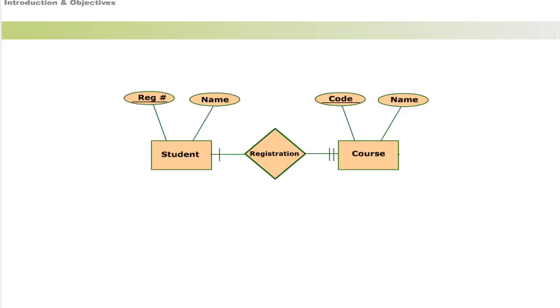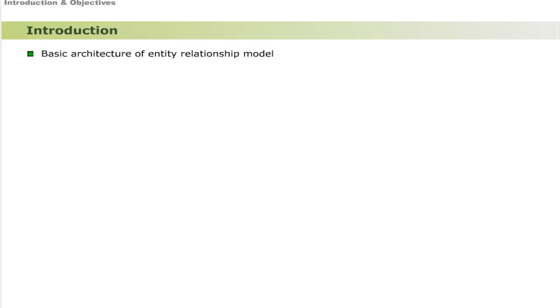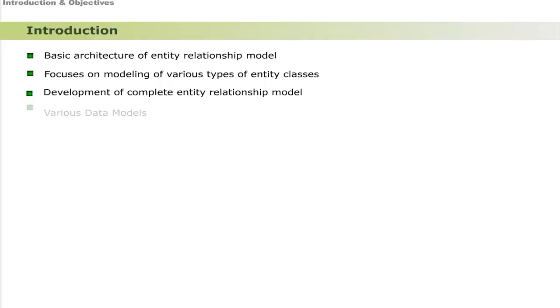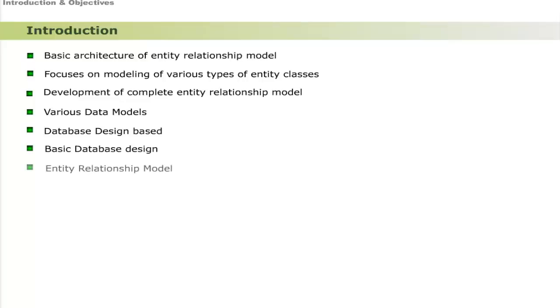Dear learners, so far we studied that the entity classes of any system have logical link with one another. This logical relationship is the theme of this unit. This unit describes the basic architecture of the entity relationship model. It also focuses on modeling of various types of entity classes and the development of a complete entity relationship model, the history of various data models, and the current trends on which database design is based. It also focuses on the basic database design derived from the entity relationship model.